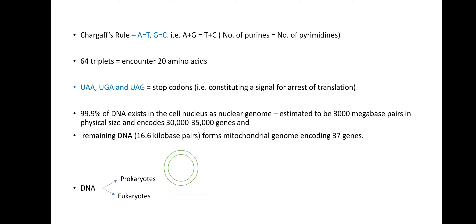64 triplets encode for 20 amino acids. UAA, UGA, and UAG code for stop codons, constituting a signal for arrest of translation. 99.9% of DNA exists in the cell nucleus as the nuclear genome, estimated to be 3000 megabase pairs in physical size and encodes for 30,000 to 35,000 genes. The remaining DNA, 16.6 kilobase pairs, forms the mitochondrial genome encoding 37 genes.